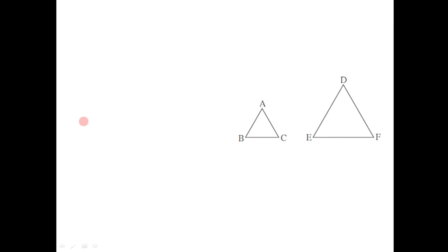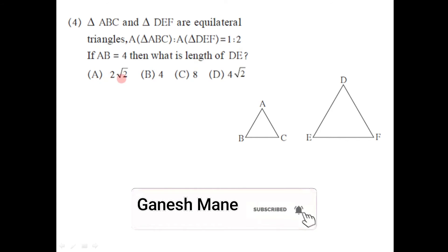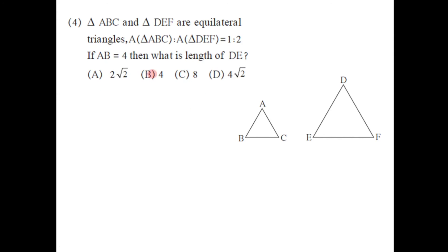The next question: two equilateral triangles ABC and DEF are given. The ratio of the area of triangle ABC to the area of triangle DEF is 1:2, and AB = 4. We need to find the length of segment DE. The alternatives are 2√2, 4, 8, or 4√2. Since any two equilateral triangles are similar, triangle ABC is similar to triangle DEF, and we apply the property that the ratio of areas of two similar triangles equals the ratio of the squares of corresponding sides.